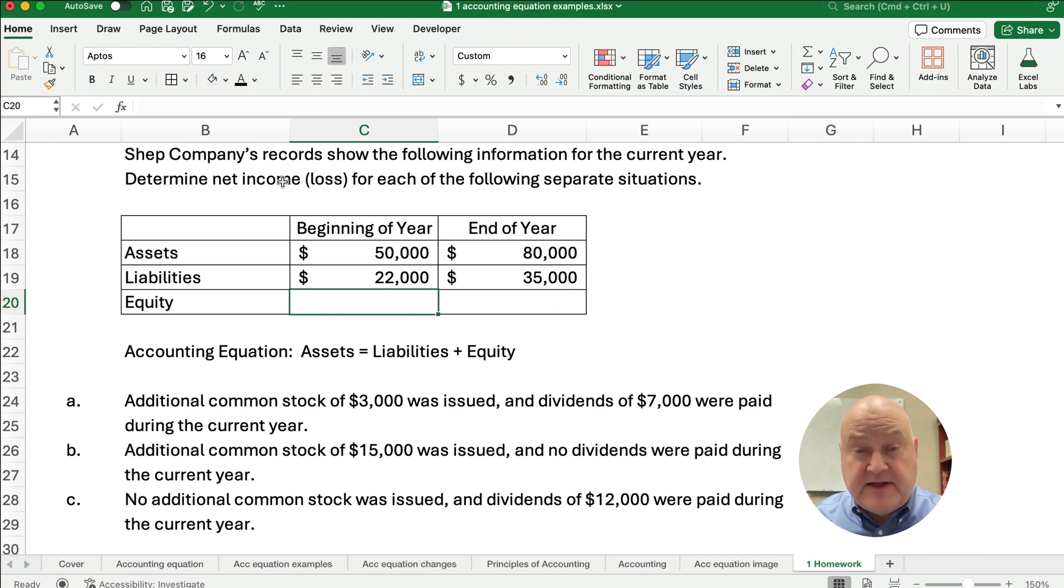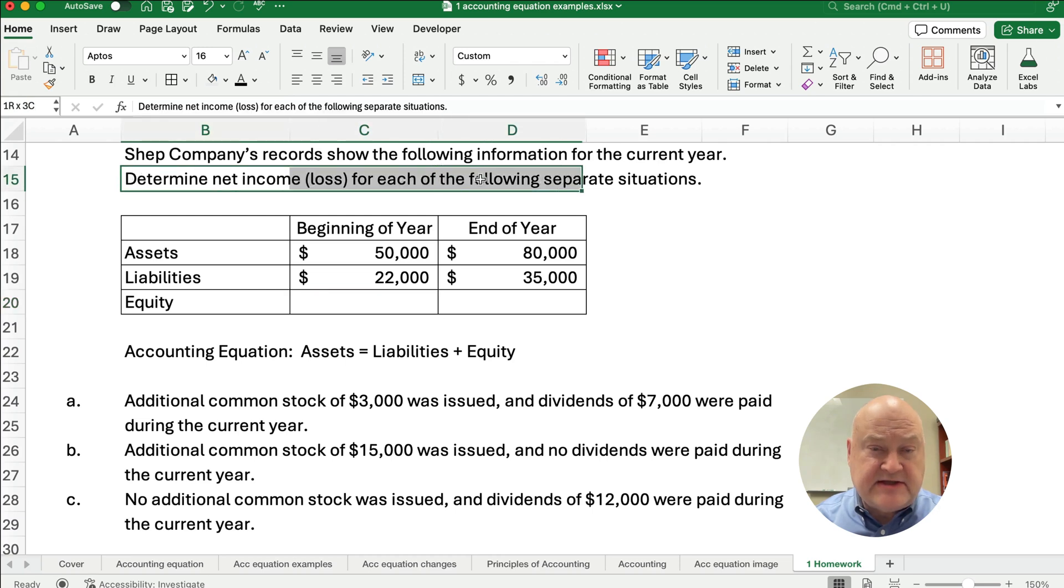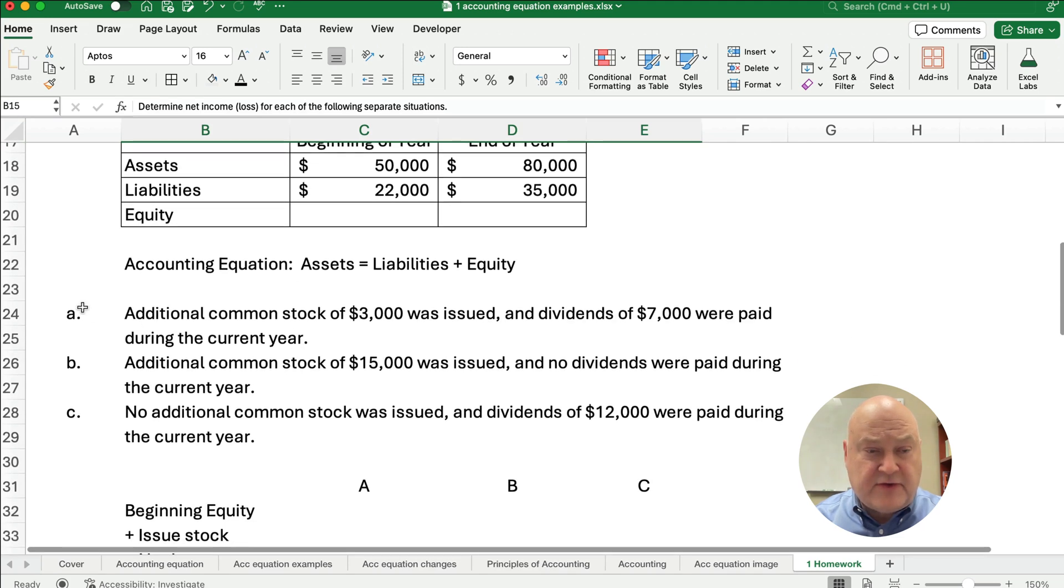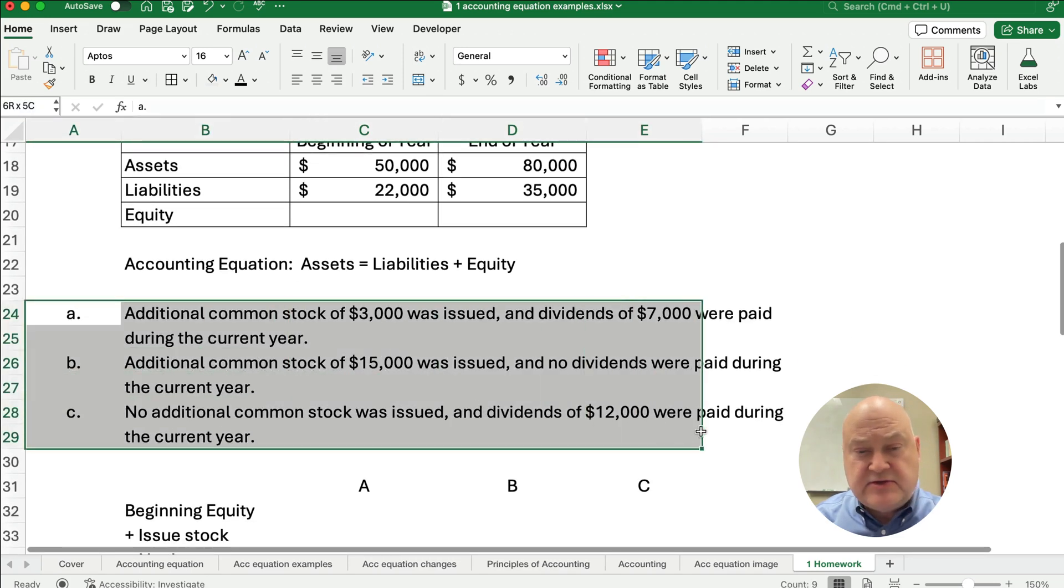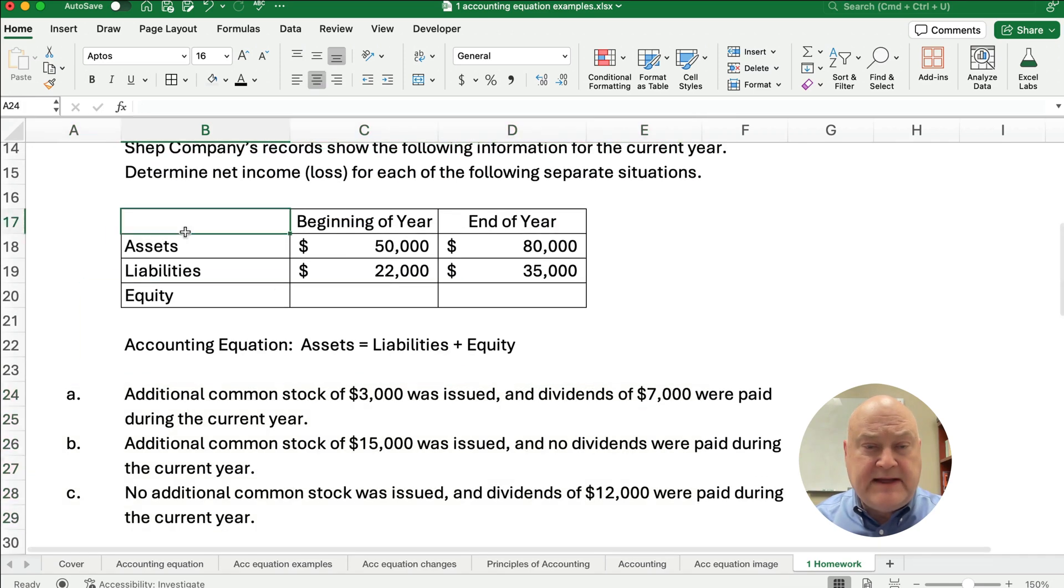So this is Shep Company. We have records for this company and the instructions are simply calculate net income or net loss with the following separate transactions. So we have three situations if we issue stock or have dividends and we're given beginning of the year assets and liabilities and the end of the year assets and liabilities. So we need to calculate equity. Remember the accounting equation is assets have to equal liabilities plus equity.